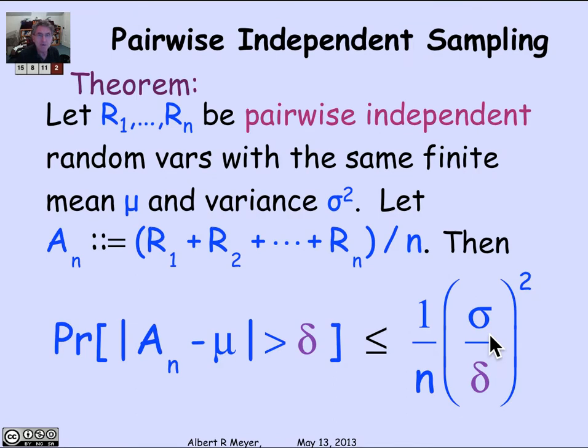Let's remember that our basic theorem says that if we have n pairwise independent random variables with the same mean and variance, and we look at their average, the probability that their average differs from the mean by more than a given tolerance delta is less than or equal to the standard deviation over delta squared times 1 over n.